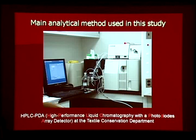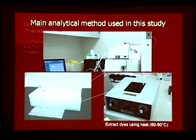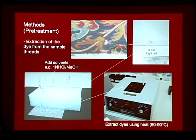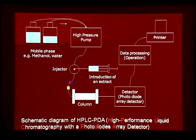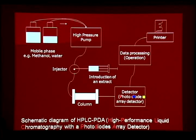The main analytical method used for this study was liquid chromatography with photodiode array detector. In this method, a small thread sample is taken from the tapestry and the dye is extracted with a reagent, such as an acid or a chelating reagent assisted with heat. The extract is then analyzed by the machine. An extract from the sample yarn is introduced through an injector and the color components present in the extract are separated by the interaction of the solid phase in the column and the liquid mobile phase. The separated color compounds pass to the detector — in this case, a photodiode array detector — where the UV visible spectra of the components are measured and recorded.